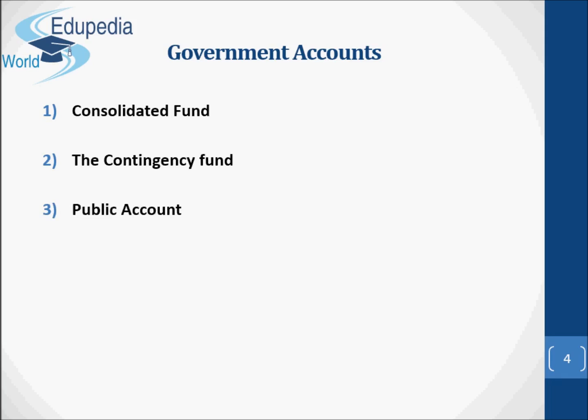The Public Account: certain transactions are not included in the Consolidated Fund. They include transactions relating to provident funds, small savings collections, other deposits, etc. The money thus received is kept in the public account. This money does not belong to the government — it has to be paid back to the persons and authorities who have deposited it. Hence, parliamentary approval is not required for payments, according to Article 266(2).